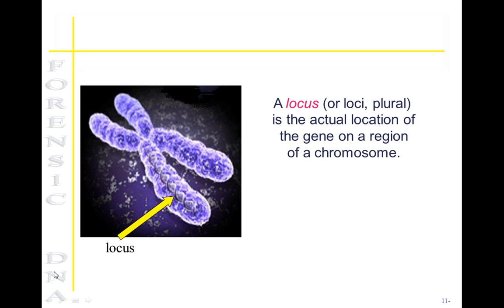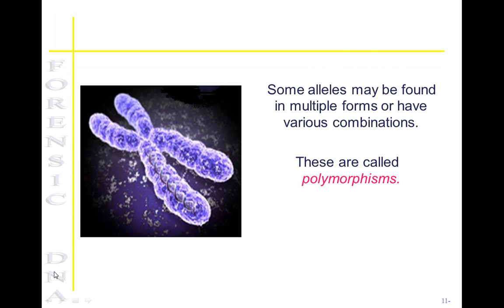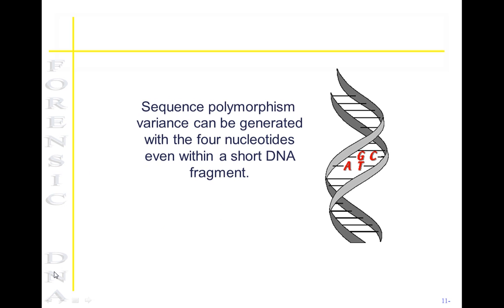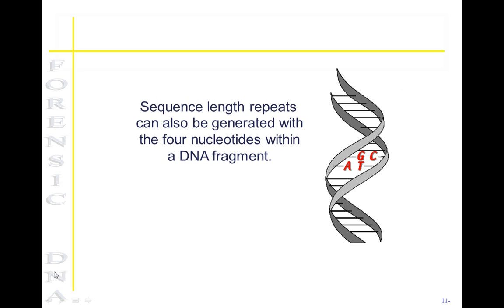A locus, or loci, is the actual location of the gene on a region of the chromosome. An allele is a form of the gene at that particular locus. The combination of alleles at a particular loci is called a genotype. Some alleles may be found in multiple forms or have various combinations, and these are called polymorphisms. Sequence polymorphism variation can be generated within the four nucleotides even within a short DNA fragment.